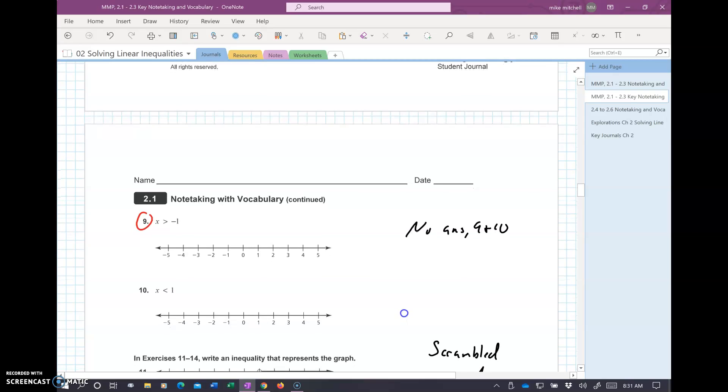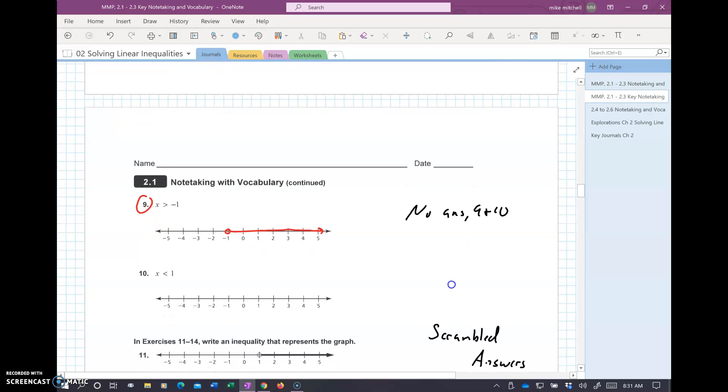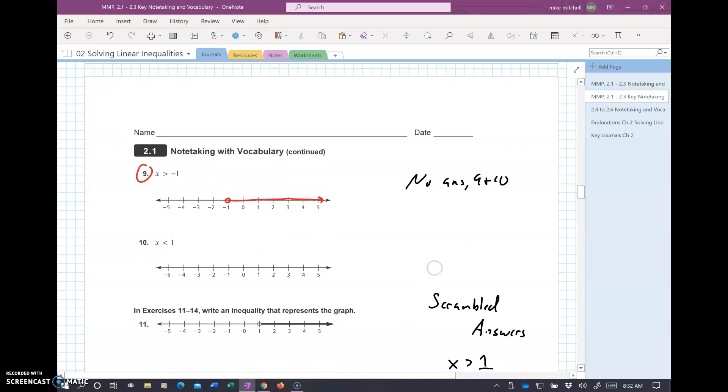Number nine, X is greater than negative one. So, I got to go to negative one. It's an open circle. There's no equals. We're going to the right. So, that's the way the arrow is pointing. And, we're good. That's it. Nine and ten, you can do those. I don't have answers for these posted.